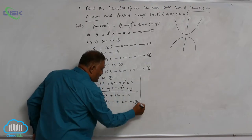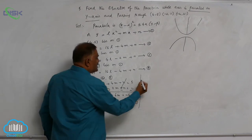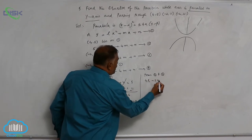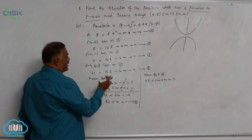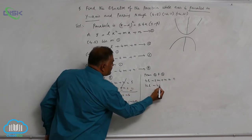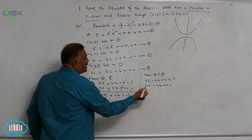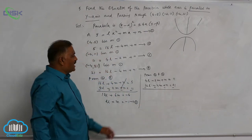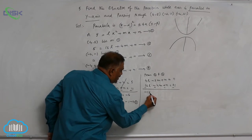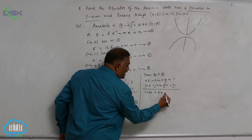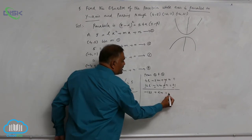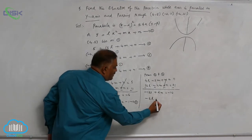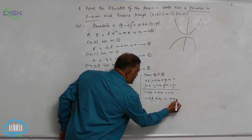Now take equations 3 and 4: 4l minus 2m plus n equals 11, and 16l minus 4m plus n equals 21. Taking subtraction, n gets cancelled. We get 4 minus 16 equals minus 12l, plus 2m, equals 11 minus 21 equals minus 10. Dividing by 2: minus 6l plus m equals minus 5. Make this equation 6.